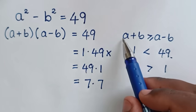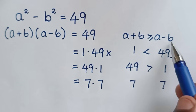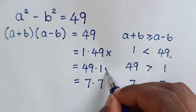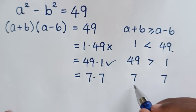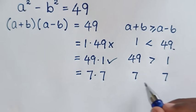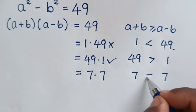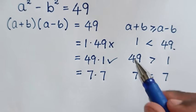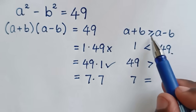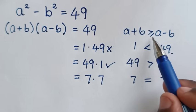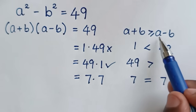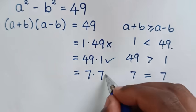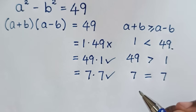For 49 times 1: a plus b equals 49 is greater than a minus b equals 1, so this selection is possible. For 7 times 7: 7 is equal to 7, so a plus b equals a minus b here, and this solution is also possible.